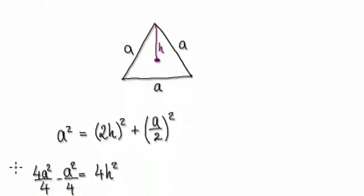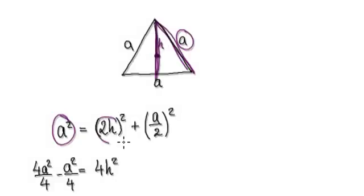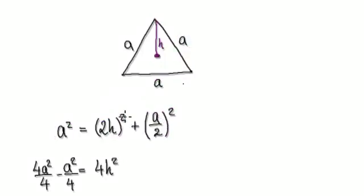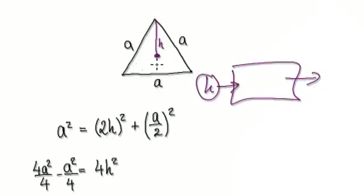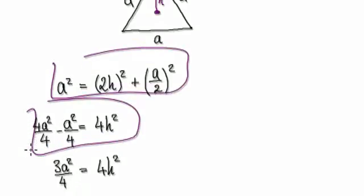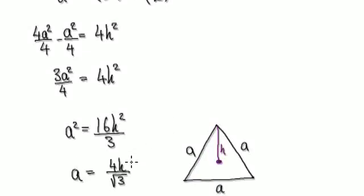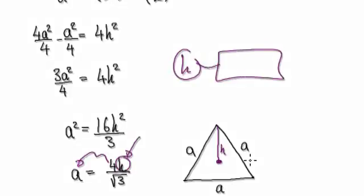To do this, when given an h, we can use Pythagoras. It's going to be: a squared equals (2h) squared plus (a over 2) squared. At the moment we are just trying to work out why, when given h, you can work out the area of this triangle. Tidy this up, and that gives you a relationship. The point is that when given an h, you can work out a.